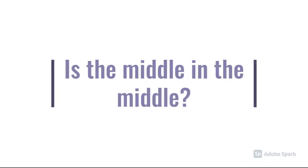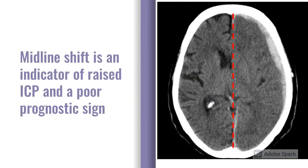The second big question is: is the middle in the middle? By that we're referring to midline shift, which is where the structures of the brain and the ventricles particularly get pushed to one side. This pushing effect is from something raising the intracranial pressure. By the time you've got midline shift, this is actually a very poor prognostic indicator from a neurosurgical point of view, suggestive of a significantly raised intracranial pressure, which is why it's important to detect and look for.